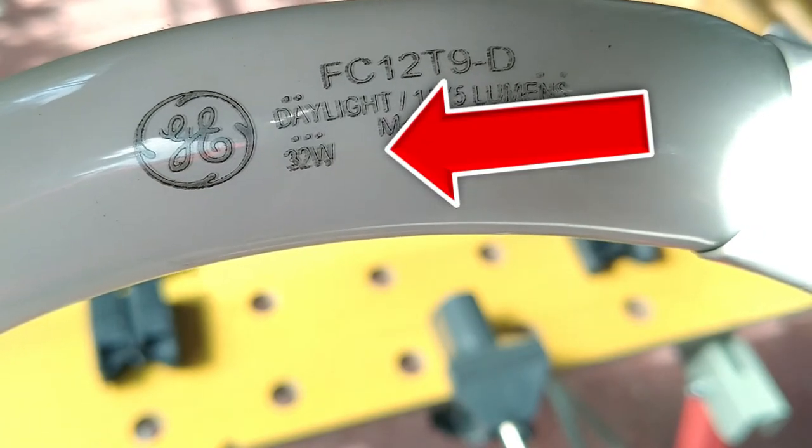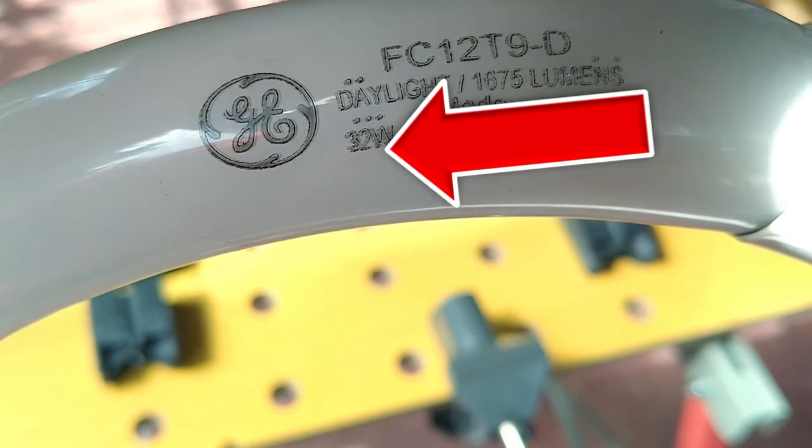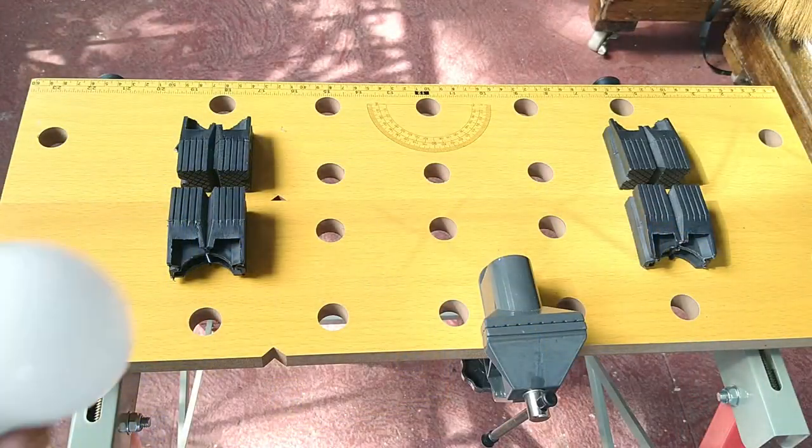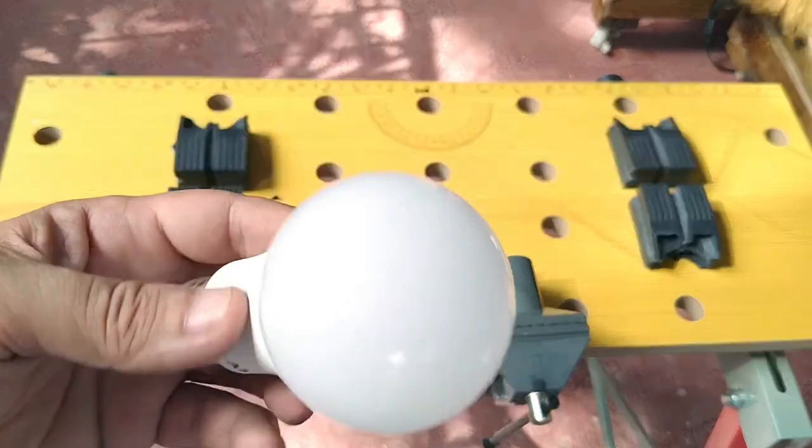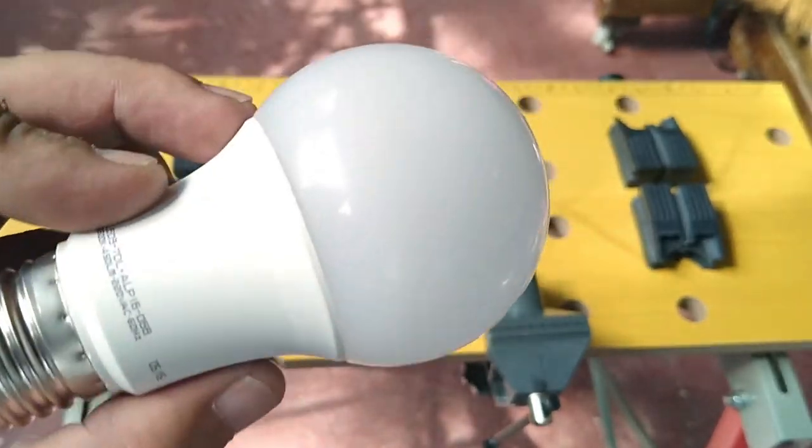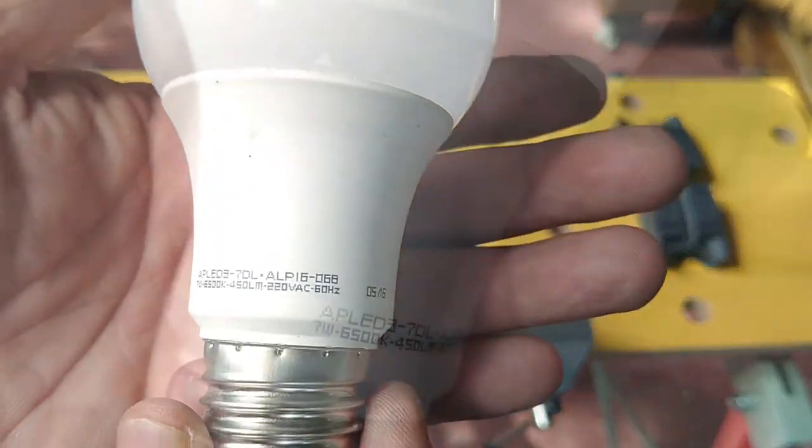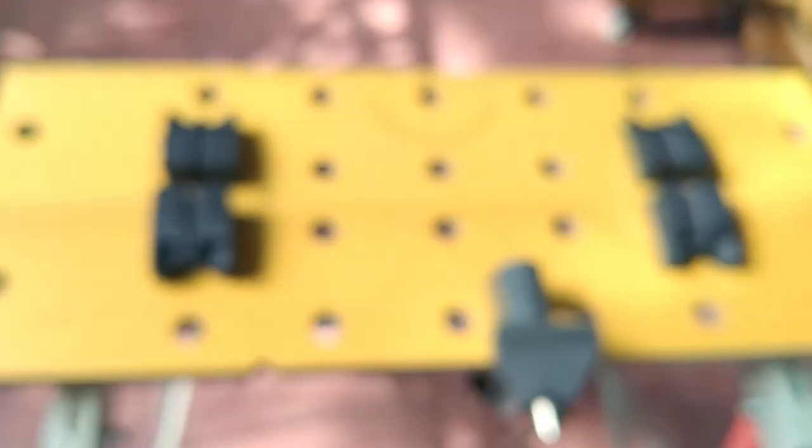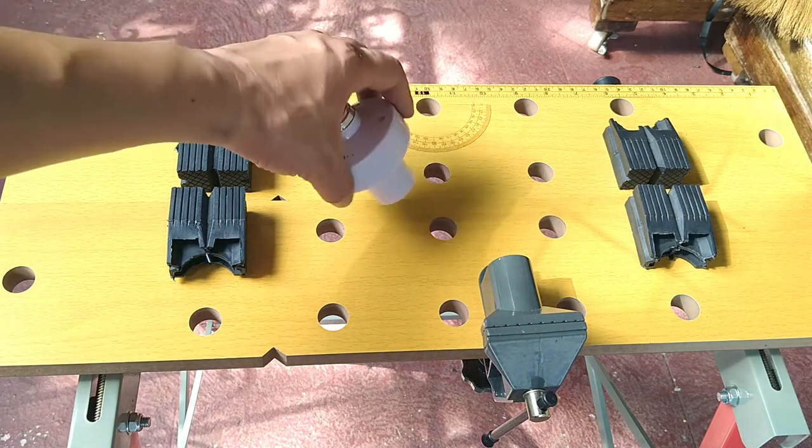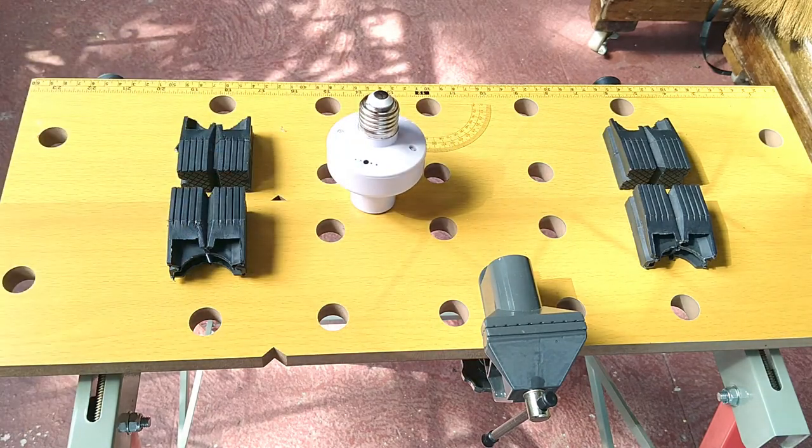Looking at the specs of the circline lamp, it consumes 32 watts and it barely illuminates the room. My test LED bulb is just 7 watts and is equal if not brighter than the lamp. In a way, it's about 75% more energy efficient.